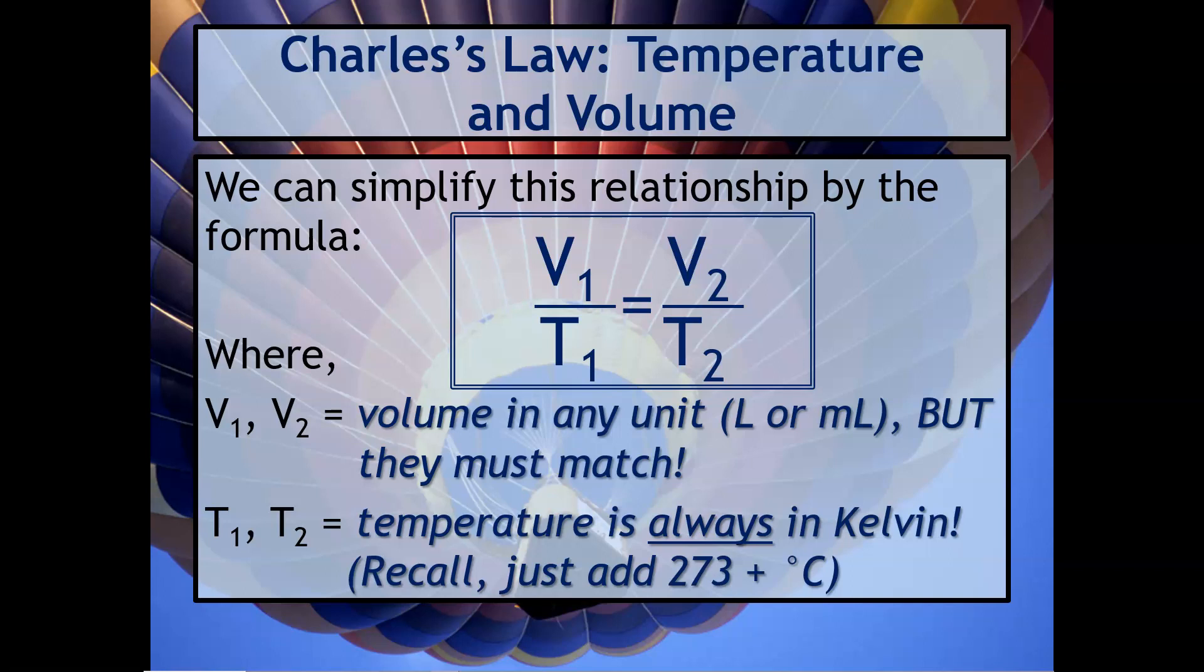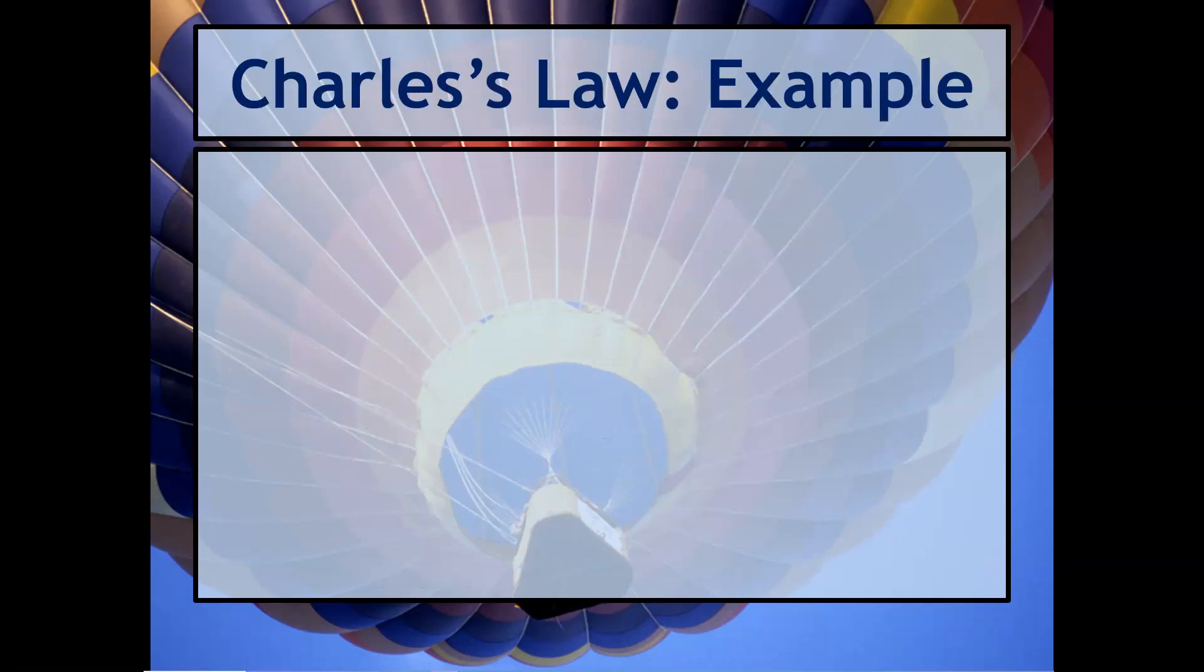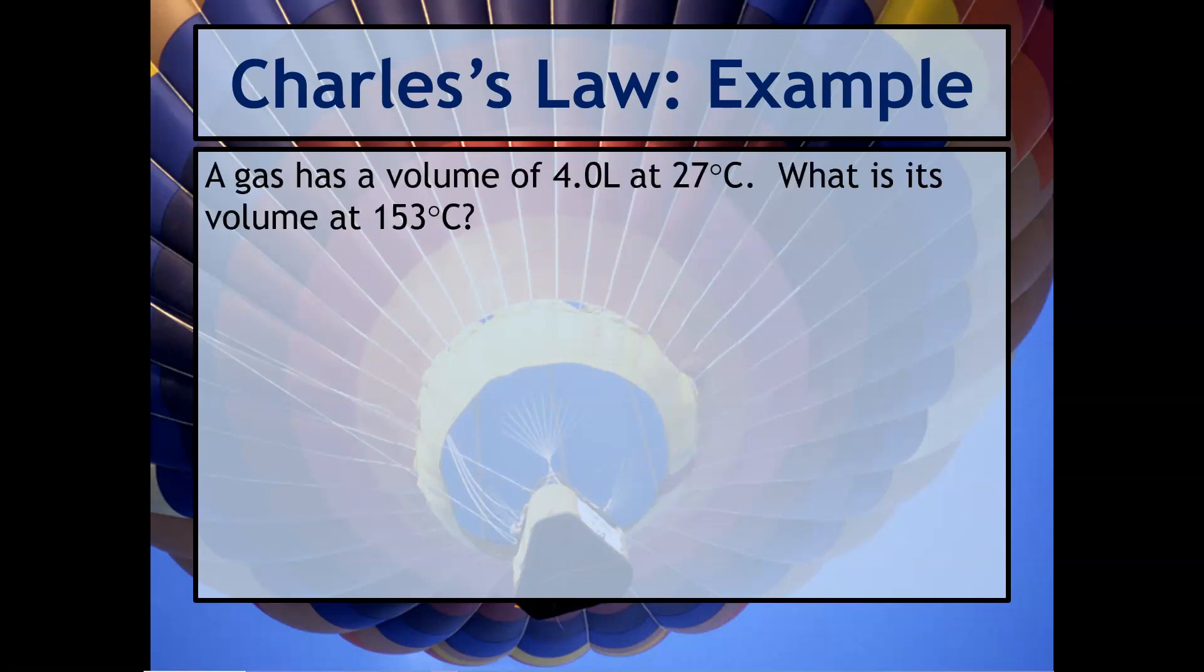Here's an example. It says a gas has a volume of four liters at 27 degrees Celsius. What is its volume at 153 degrees Celsius? Again, I'm going to extrapolate the information from the problem. Notice I added 273 to that temperature to get it automatically in Kelvin. I tend to do that right away so I don't forget. I'm solving for the volume, and then there's the other temperature. Again, I added 273 to that.